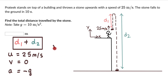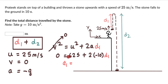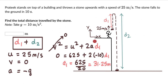For the first part, we use v² = u² + 2a·D1. We know v² is 0 and u² is 625, so: 0 = 625 + 2×(−10)×D1, which gives 0 = 625 − 20·D1. Rearranging, D1 = 625 divided by 20, which equals 31.25 meters.